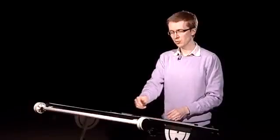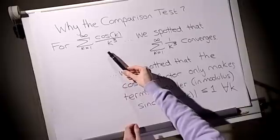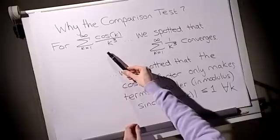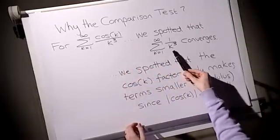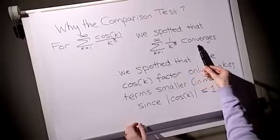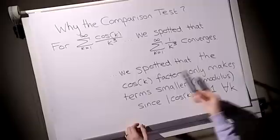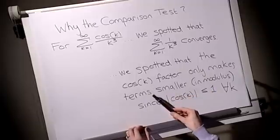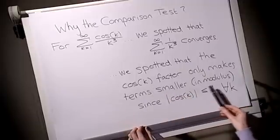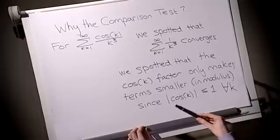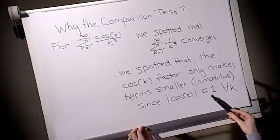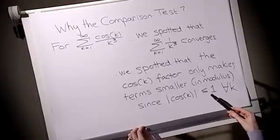As a quick summary, we asked the question, why did we use the comparison test? For this infinite series, we were able to spot that it looked quite a lot like 1 over k cubed, which itself converged. We were also able to spot this cos k factor on the top only made the term smaller in modulus, or occasionally equal if the modulus was equal to 1. But the modulus of cos k is no bigger than 1, so this didn't make it worse, and we could choose m equal to 1.